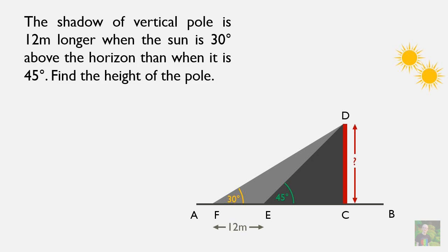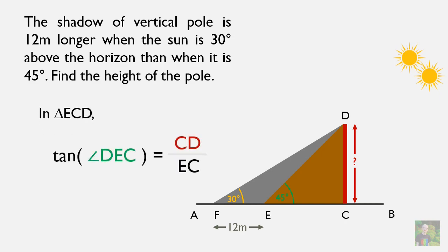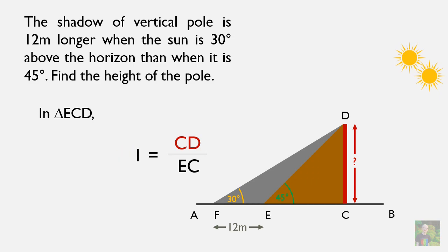We need to find the height of CD. In most questions of height and distance, we compare two right-angled triangles having one equal value and substitute. In triangle ECD, tan(angle DEC) equals perpendicular by base, which is CD by EC. Since angle DEC equals 45 degrees and tan 45 equals 1, after cross-multiplying we conclude that EC equals CD.